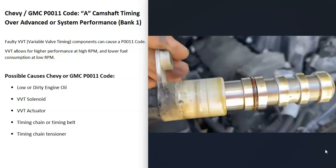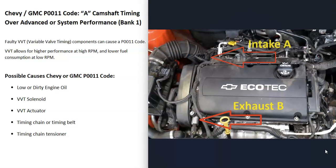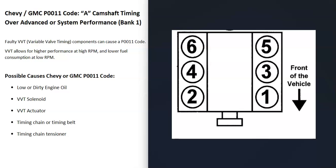The next possible cause is something going on with the variable valve timing solenoid. If you have a four-cylinder engine, there are going to be two — one on the intake side and one on the exhaust side. If you have a V6 or V8, you're going to have four of them. You want to find bank one, which is always the side of the engine with the number one cylinder. The opposite of that would be bank two.